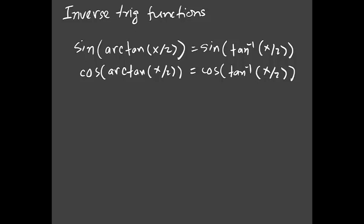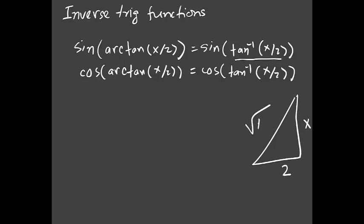We know formulas like if you have sine and arc sine you can cancel, but here we have sine and arc tangent. So what we do is first work on tan inverse(x/2) and make a right triangle. Tan is opposite over adjacent, so opposite is x and adjacent is 2, then the hypotenuse will be √(x² + 4).